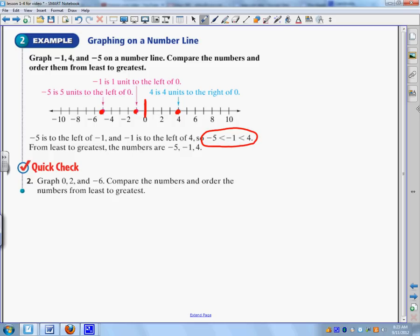So now, try this one in your notebooks. You can push pause and then come back. Graph 0, 2, and negative 6. Compare the numbers and order the numbers from least to greatest. So try it in your notes, and then we'll come back.